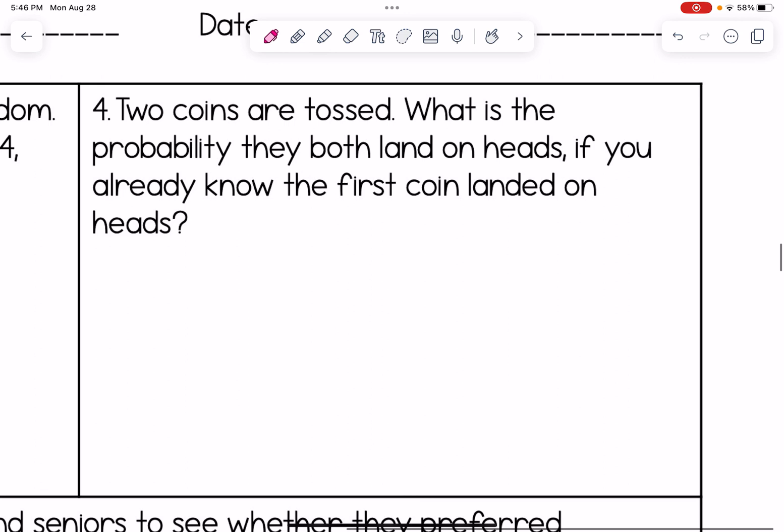Number four is a little bit different. Two coins are tossed. What is the probability they both land on heads, if you already know the first coin landed on heads? So we have coin one, and we have coin two. Coin one would have been a 1/2, but we already know that it landed on heads. We already know what happened to it. And by that 1/2, I mean the probability of getting heads or tails on a coin is 1/2. But we already know the answer to that. We know it's heads.